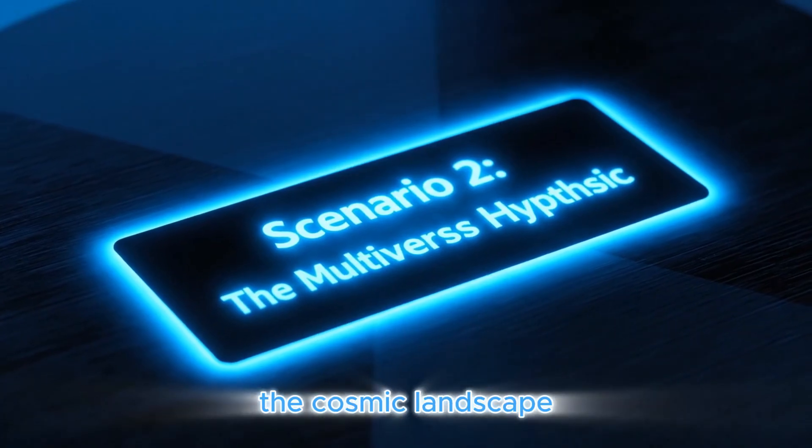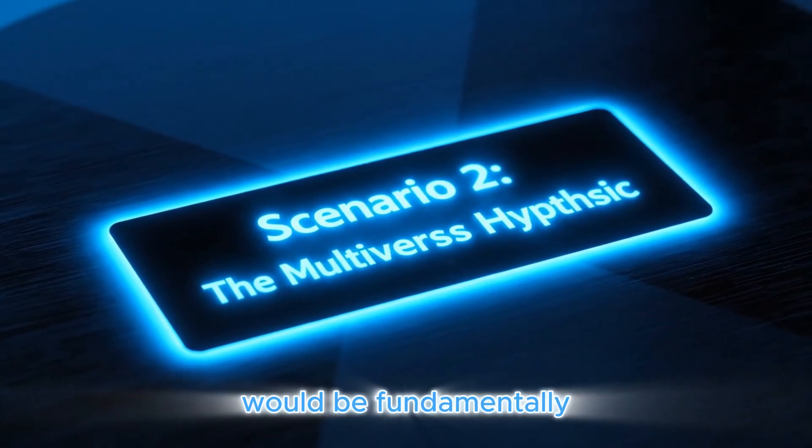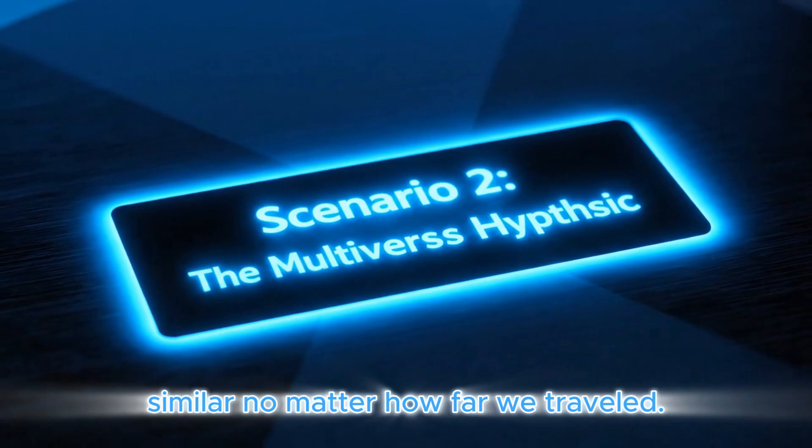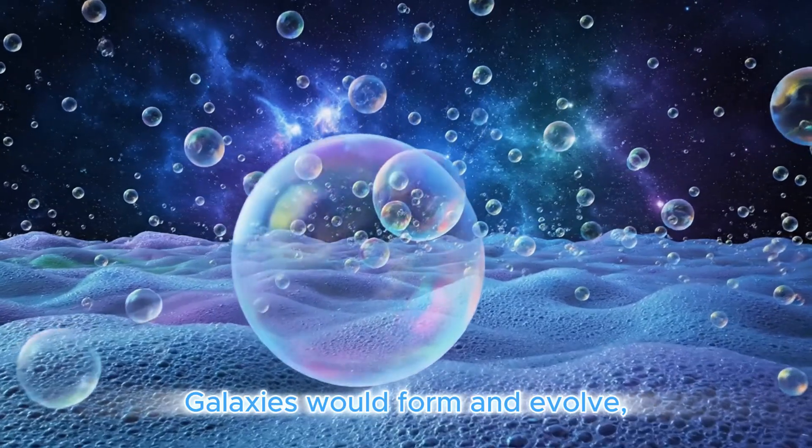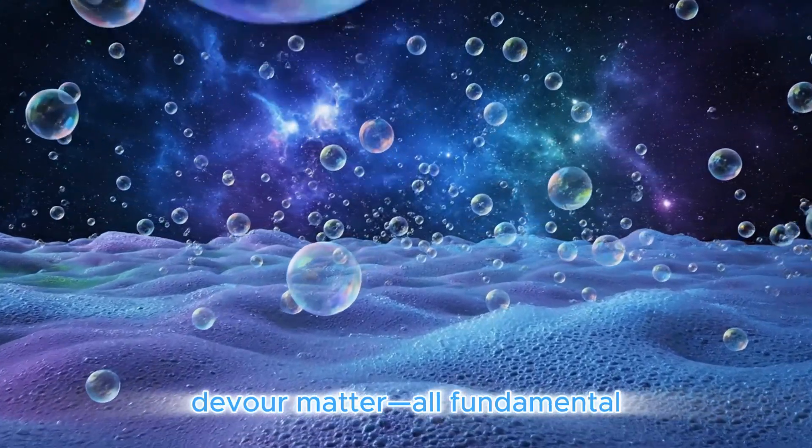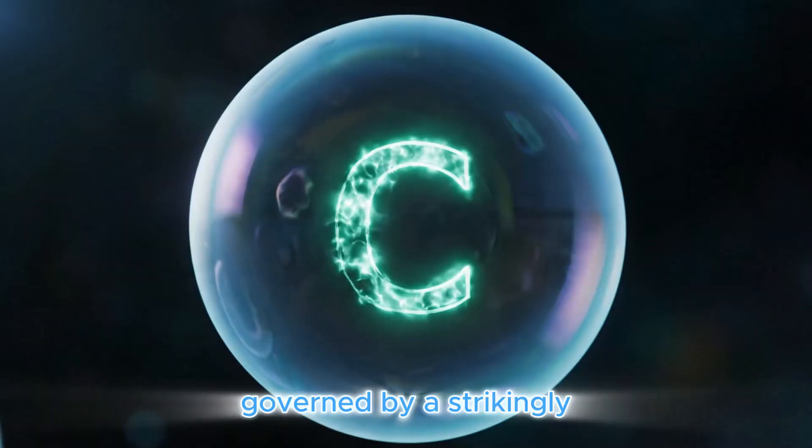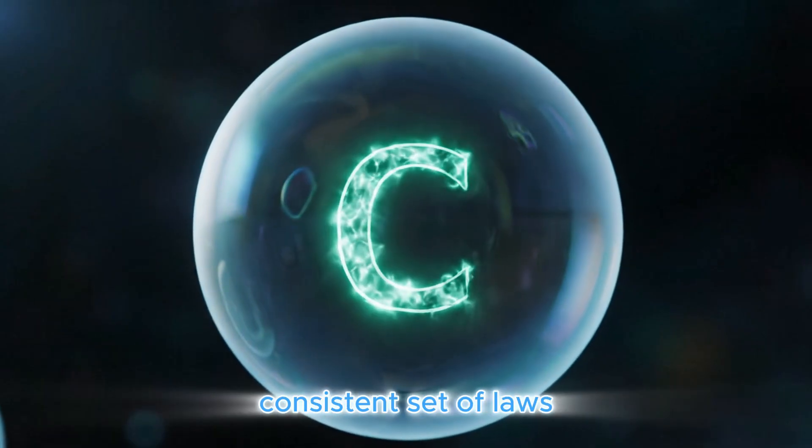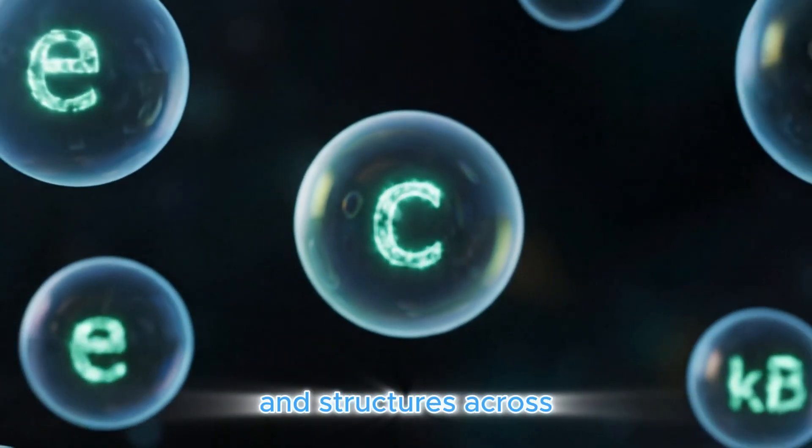Due to the principle of homogeneity, the cosmic landscape would be fundamentally similar no matter how far we traveled. Galaxies would form and evolve, stars would be born and perish, and black holes would devour matter - all fundamental processes occurring everywhere, governed by a strikingly consistent set of laws and structures across an almost limitless space.